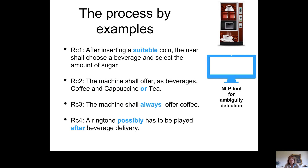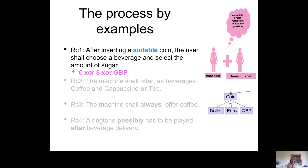Let me explain the idea with a toy example of a coffee vending machine. We consider four requirements and run them through a natural language processing tool for ambiguity detection, which highlights the ambiguous terms in blue. After that, manual analysis is needed to see if the defects found by the tool are actual ambiguities, variabilities, or false positives.